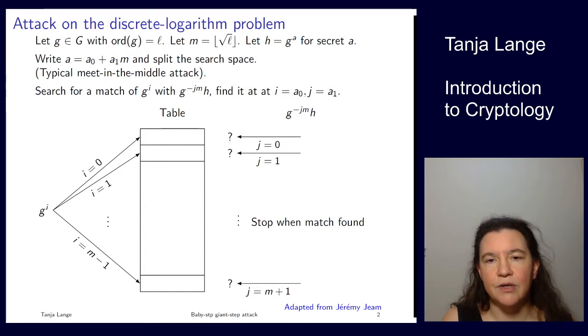Then you can fake signatures in Alice's name, you can impersonate her in ElGamal key exchange, and you can read all the messages that somebody sent to her with ElGamal encryption. So that would be a real big problem, and we're now looking at ways to break the discrete logarithm problem.